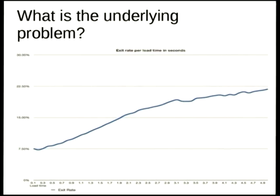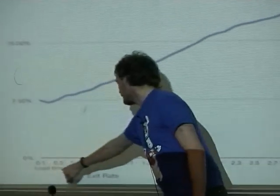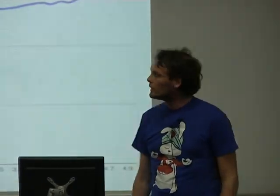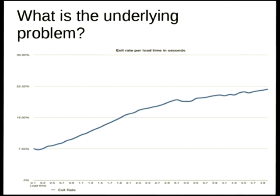The underlying problem that Varnish addresses — it's an HTTP reverse proxy. It sits in front of your CMS and caches pages. This graph shows the load time from 0.1 seconds to 5 seconds and the exit rate; this graph is from Wikia, and it shows quite clearly that if your web page is slow, people will not continue looking at more web pages. If you're a newspaper making money in advertisements, that's a problem. If you're selling stuff, people are going to look at your front page, get bored, and leave — a bit like walking into a shop and not getting service.